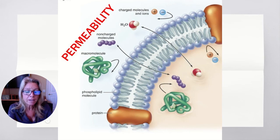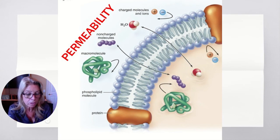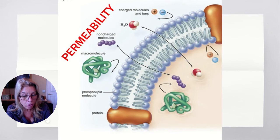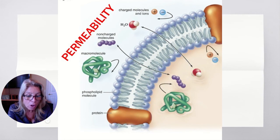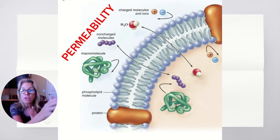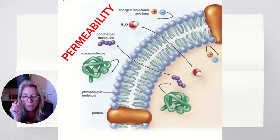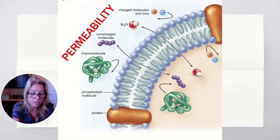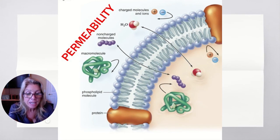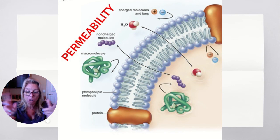Non-charged molecules like fats can go through the phospholipid bilayer because fat dissolves into fat. A large molecule cannot get through. In general, permeability of the plasma membrane: what can pass freely through a phospholipid bilayer includes water, gases like oxygen and carbon dioxide, and small non-charged — usually non-polar — molecules. What cannot pass without help are large or charged molecules.